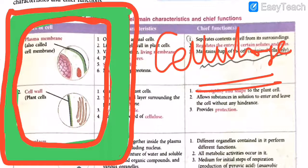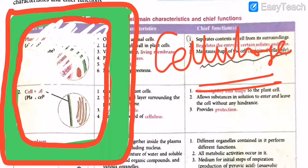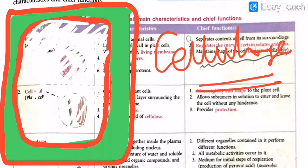Let's put a tick mark on the cell wall — only present in plant cells. Third one: the cytoplasm. The cytoplasm includes all the parts together within the plasma membrane, excluding the nucleus. It contains a mixture of water and soluble inorganic and organic compounds, and various organelles. Cytoplasm is a semi-transparent substance — completely liquid — and it covers almost every organelle, present throughout the cell except the nucleus.